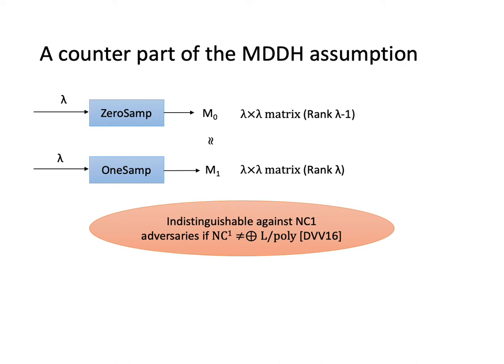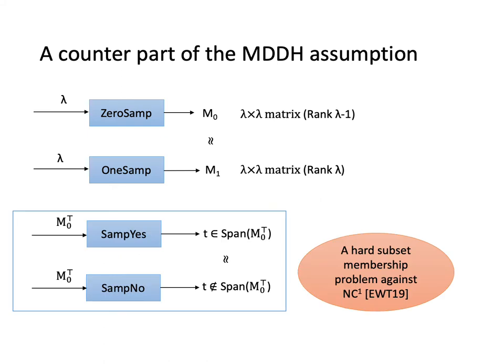We now need to find the counterpart of the MDDH assumption. Although the assumption that NC¹ is not equal to parity L/poly does not directly give us tools to construct cryptographic schemes, Degwekar and others showed that this assumption implies the indistinguishability of two distributions, which are 0-SAMP and 1-SAMP against NC¹ adversaries. Here, 0-SAMP outputs rank deficient matrices and 1-SAMP outputs full ranked matrices. And Applebaum and others showed that this implies a hard subset membership problem.